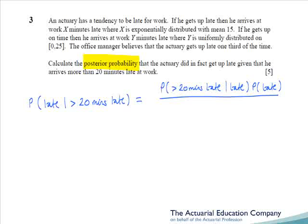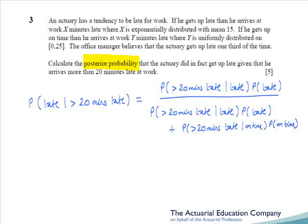The denominator can be split into the probability of being more than 20 minutes late given he got up late, times the probability he's late, plus the probability of being more than 20 minutes late given he got up on time, times the probability he got up on time. This is now the third time since April 2010 that examiners have required a first principles approach to obtaining the posterior distribution — clearly an examiner's favourite, and students should take note.